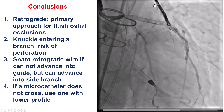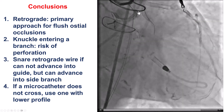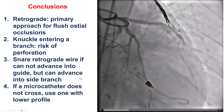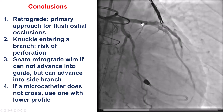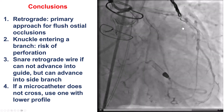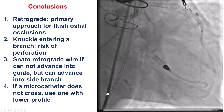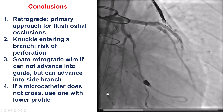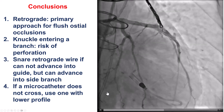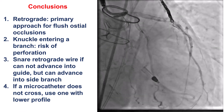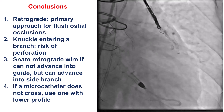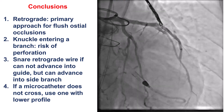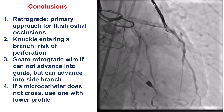Finally, when there is difficulty crossing with a retrograde microcatheter, one solution is to advance a different microcatheter. The FineCross M3 used in this case seems to be very promising, with a very low profile and excellent crossing capacities. Thank you.